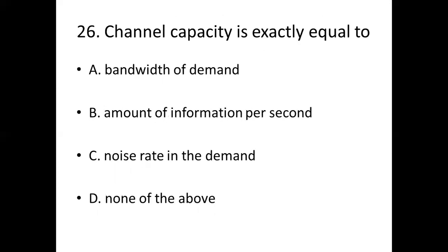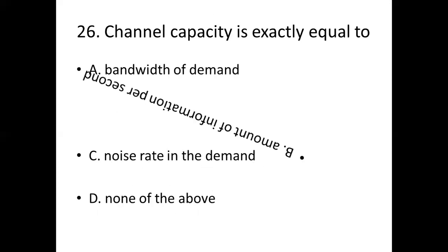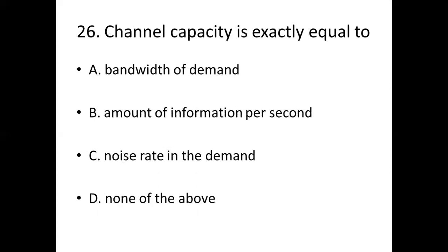26th bit. Channel capacity is exactly equal to: Option A, bandwidth of demand. Option B, amount of information per second. Option C, noise rate in the demand. Option D, none of the above. Answer: Option B, amount of information per second.